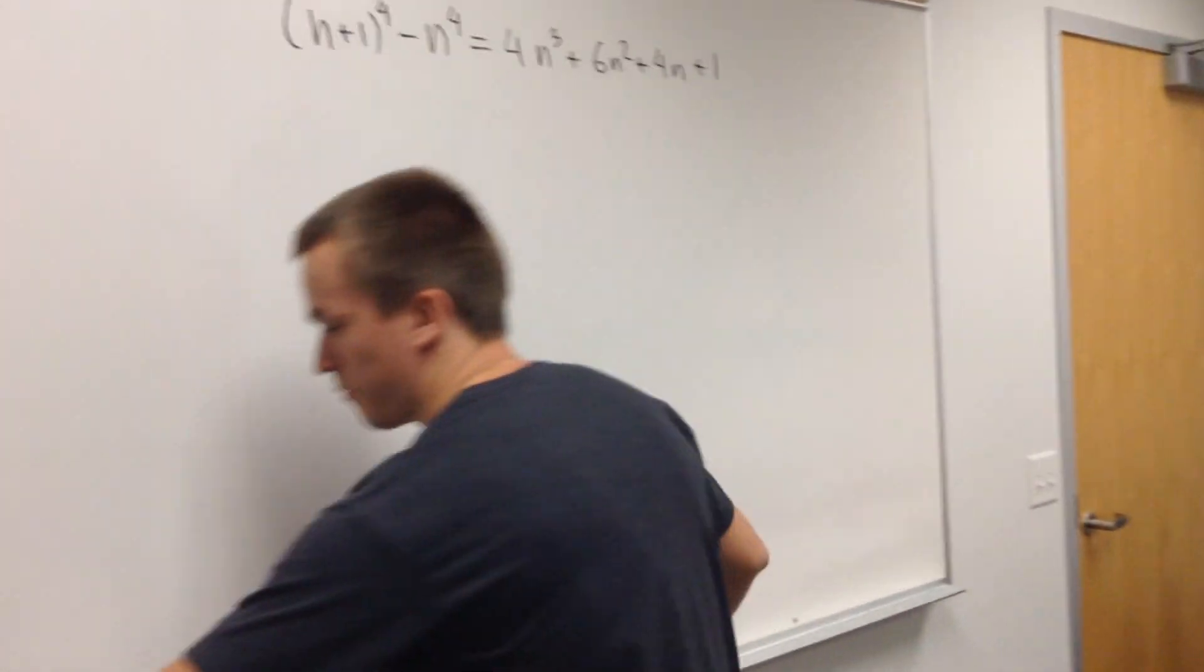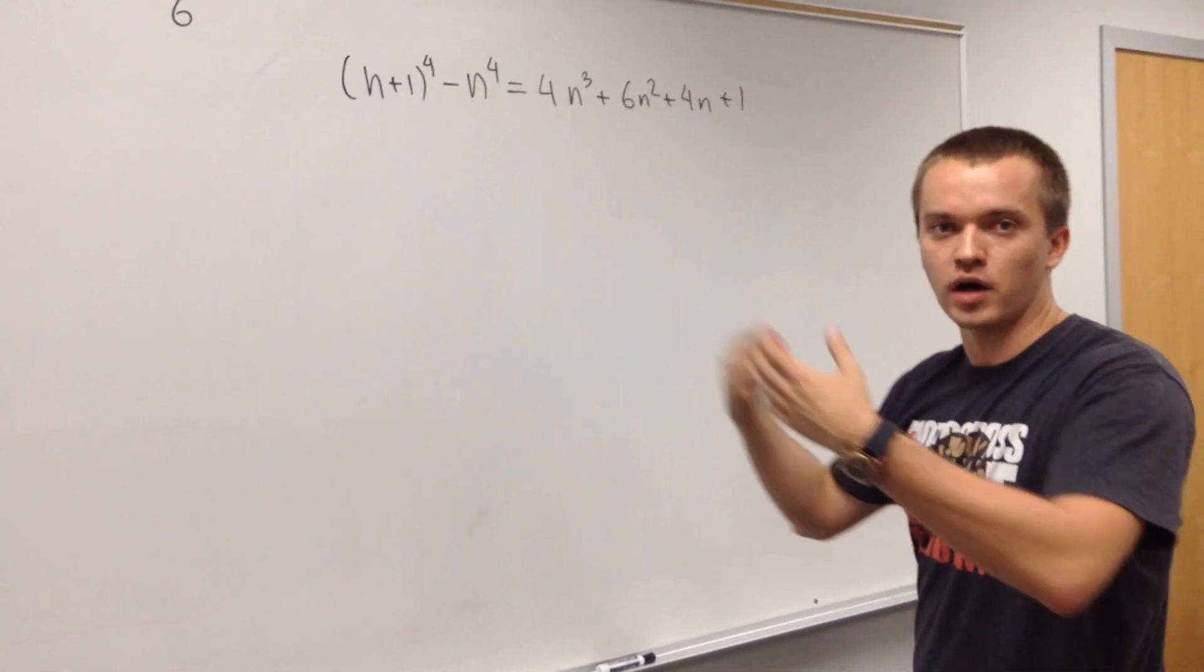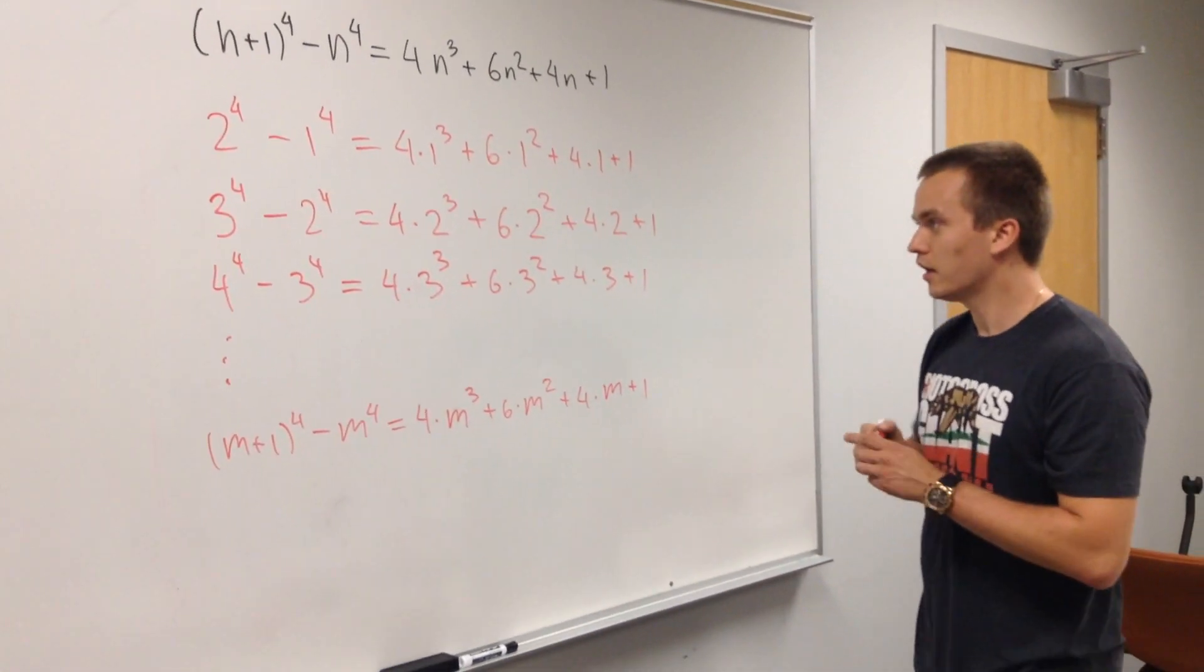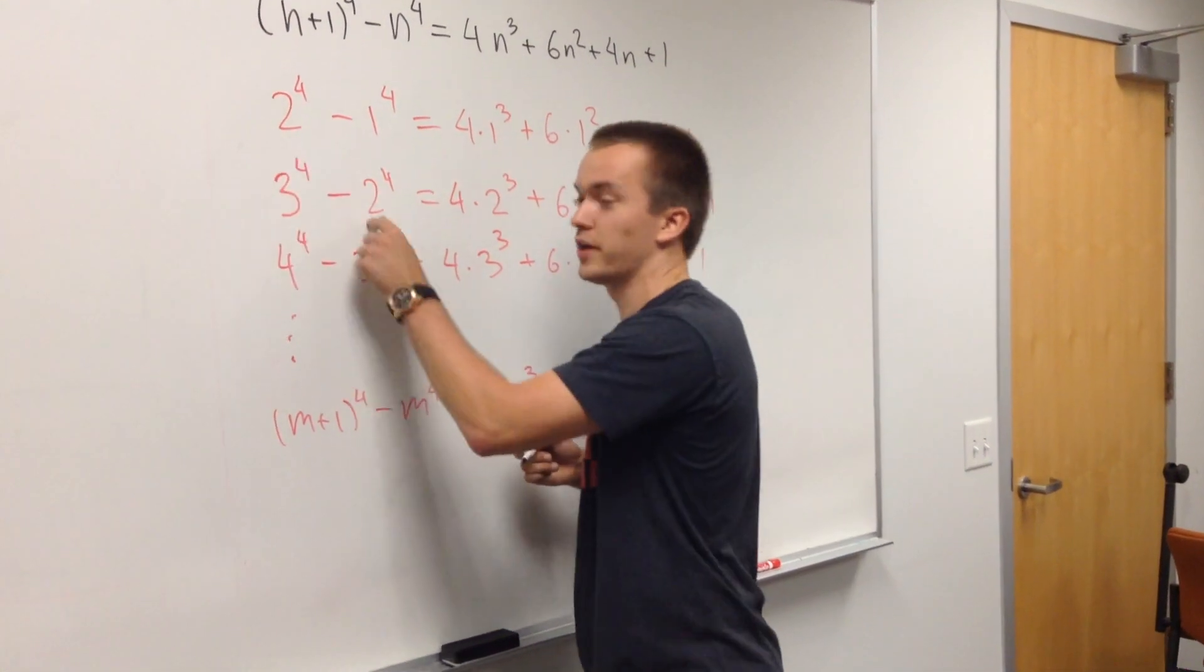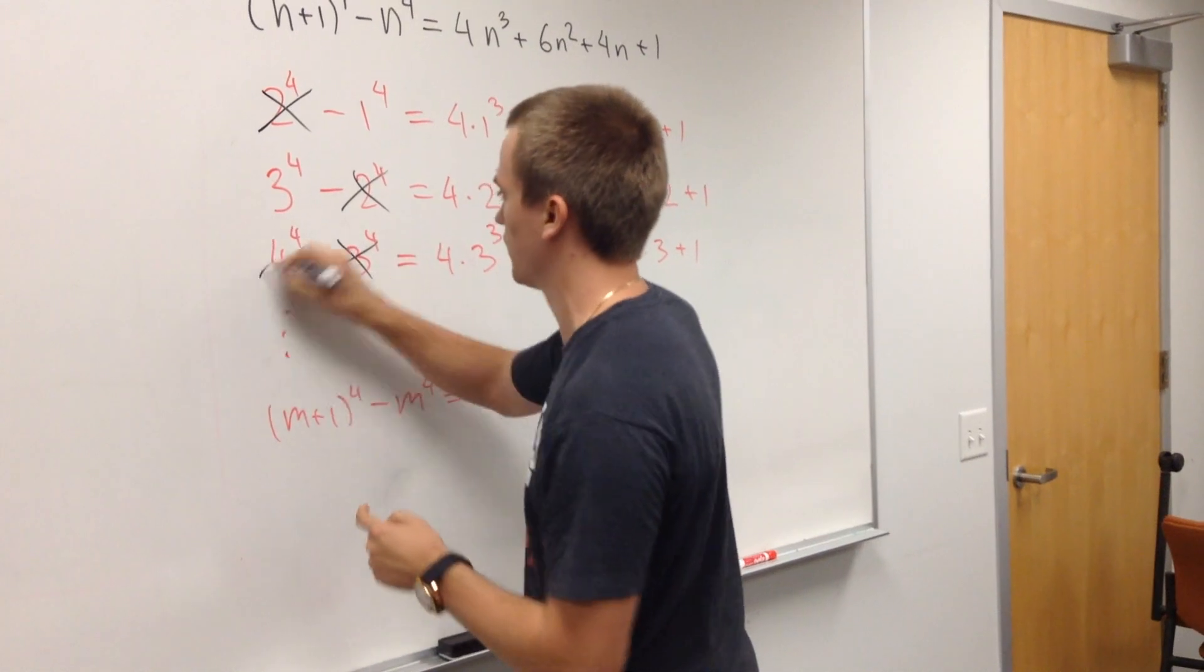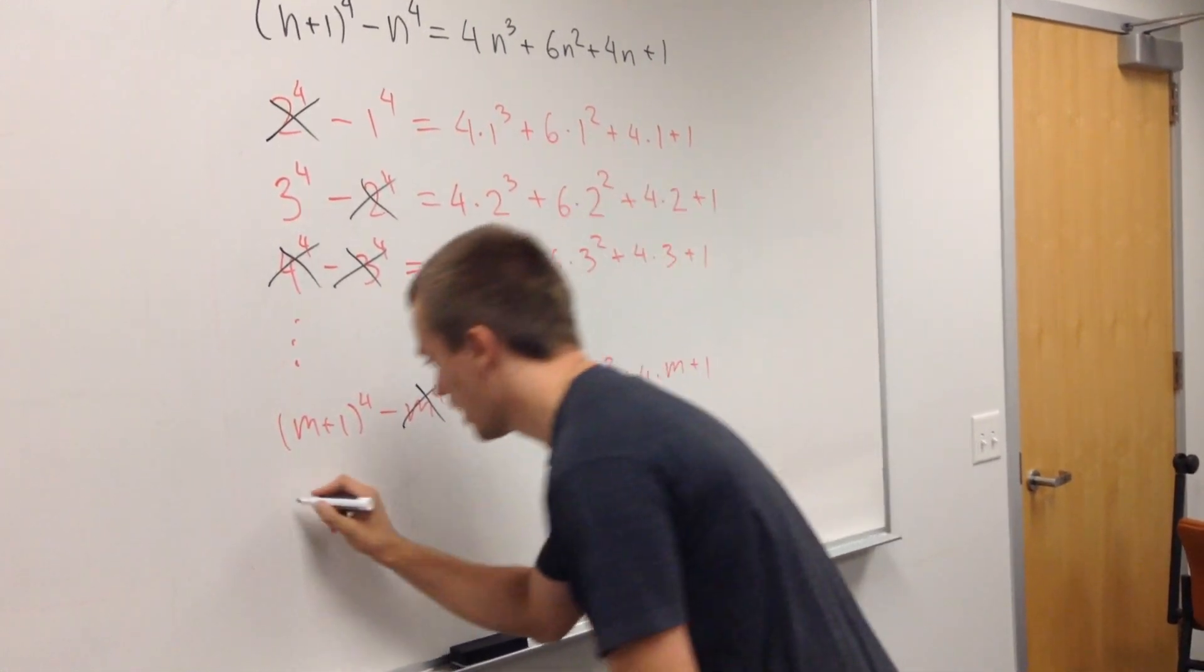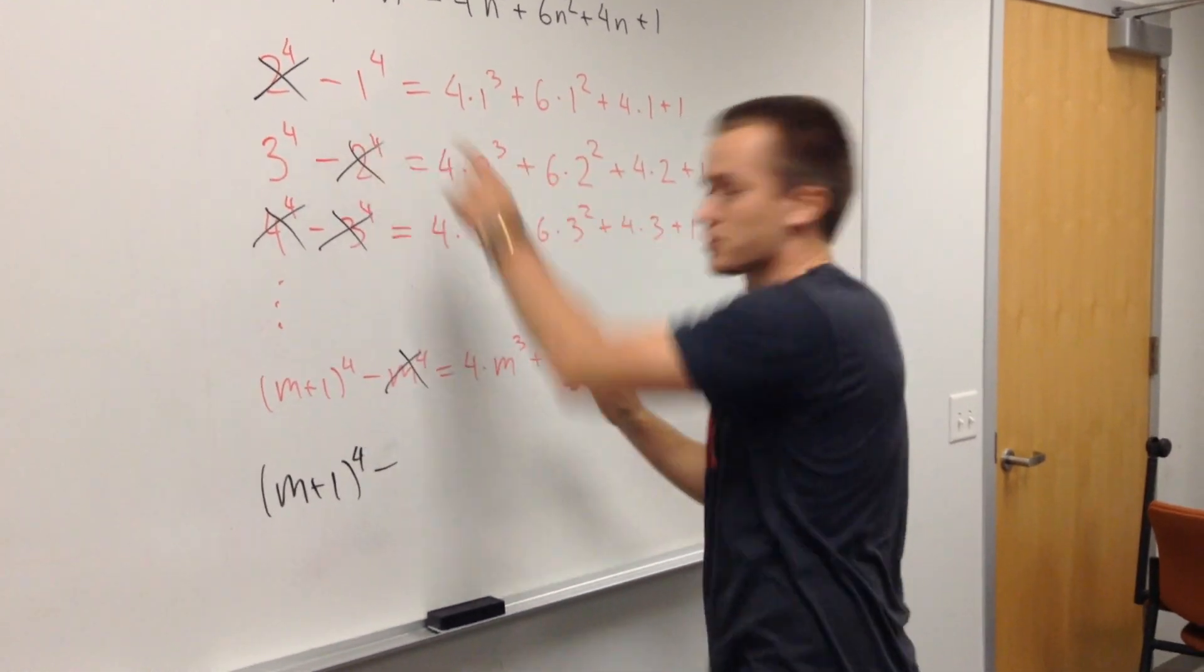And again, let's use the same trick. We have some formula. And let's just take n equal to 1, n equal to 2, n equals to 3, n equals to m. So what I will get? m plus 1. Okay, and let's do magic again. I see 2 to the fourth, negative 2 to the fourth, got cancelled. 3 to the fourth, minus 3 to the fourth, got cancelled. 4 got cancelled. And this term will got cancelled with the previous one over here. So on the left side, I will have m plus 1 to the fourth, minus 1.